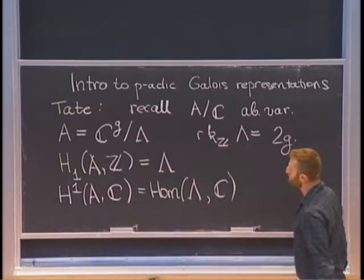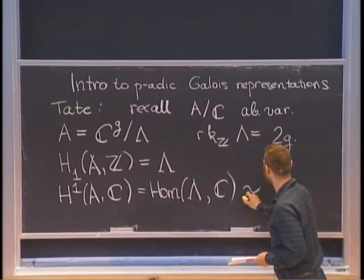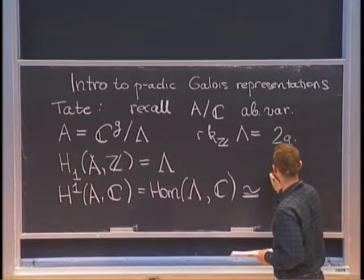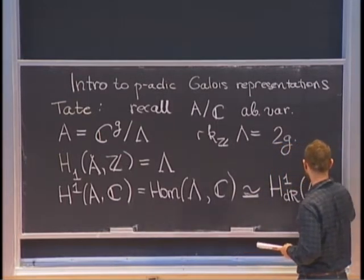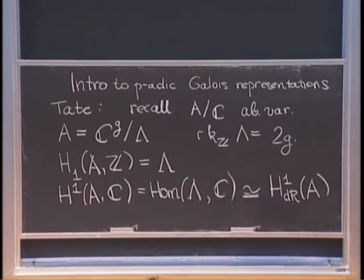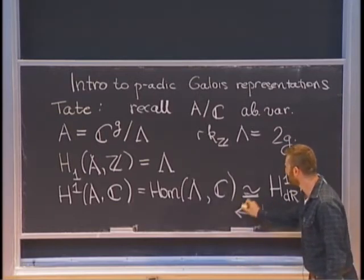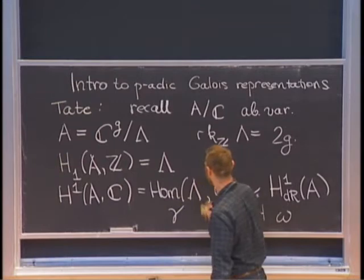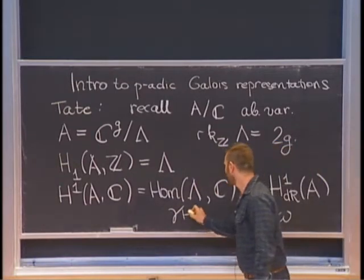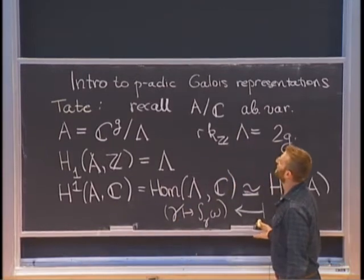That means H¹ of A with complex coefficients — imagine taking the dual of this and then tensoring with ℂ — is like Hom from Λ into ℂ. The singular cohomology of a manifold is the same thing as its de Rham cohomology. We have this de Rham isomorphism. So this is calculus, this is integration: if you've got a differential form here, it goes to some function on the lattice. Take your element, it defines a cycle, and send it to the integral.